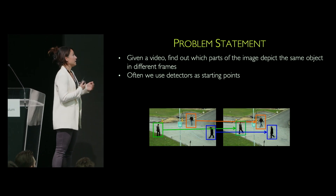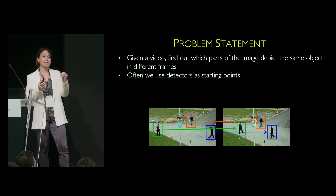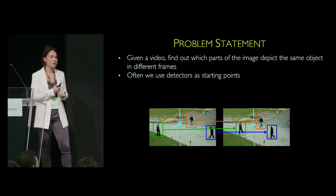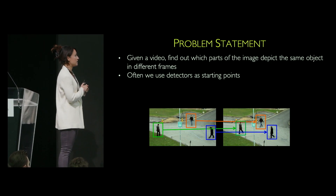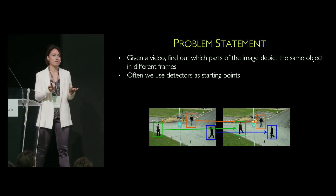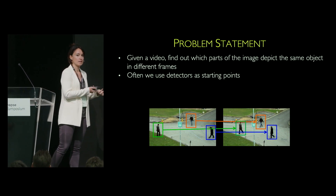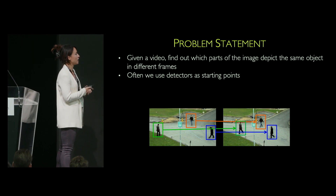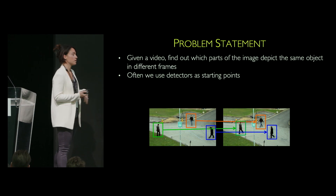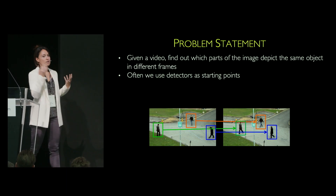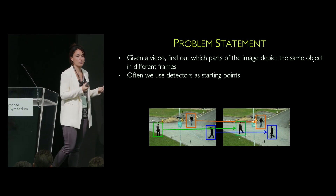More technically, the problem statement is that we need to take an image and understand which part of the image depicts the same object. Here we can see three pedestrians that we're interested in tracking. We need to understand first where these pedestrians are in the image — the detection part — and then in a video sequence, how these pedestrians and objects correspond to each other in order to form a trajectory in time.